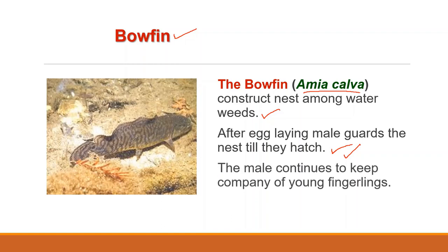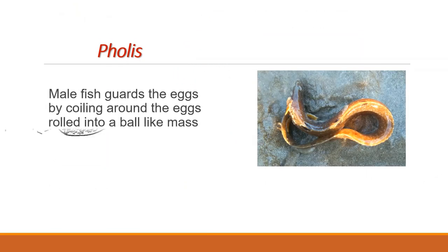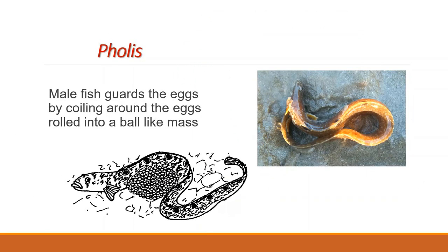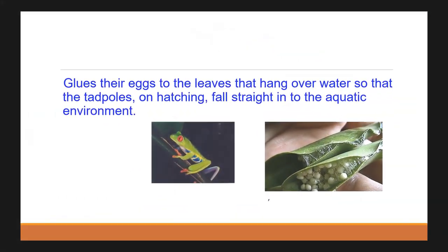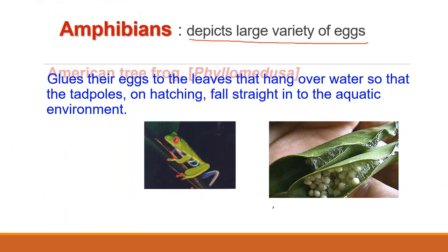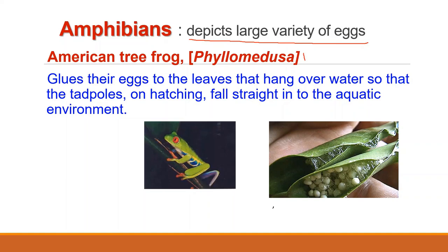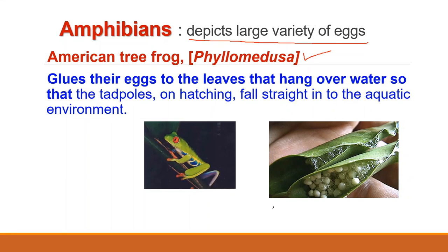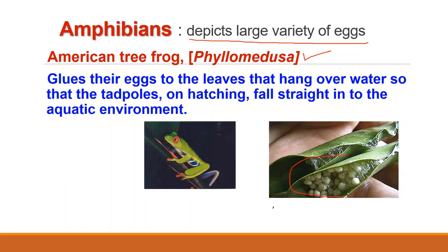The male bowfin continues to keep the company of young ones and fingerlings also. In Polypterus, the male fish guards the eggs by coiling around them rolled into a ball-like mass. In case of amphibians, which depict a vast variety of nests, for example the American tree frog Phyllomedusa glues the eggs to leaves that hang over water so that the tadpole on hatching falls straight into the aquatic environment.